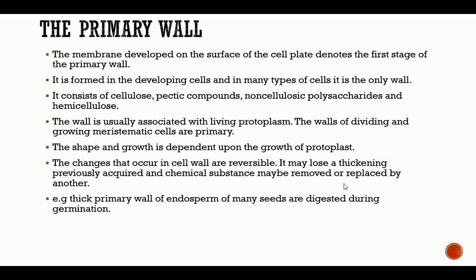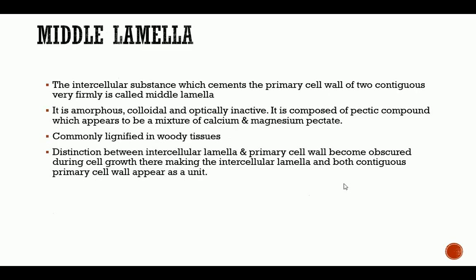For example, the thick primary wall of the endosperm of many seeds is digested during germination. This means that at the point of seed germination, the primary cell wall surrounding the endosperm begins to break down, allowing the germinated hypocotyl or epicotyl to emerge — that is what we mean when we say it is reversible. The middle lamella is the intercellular substance which cements the primary cell walls of two contiguous cells.